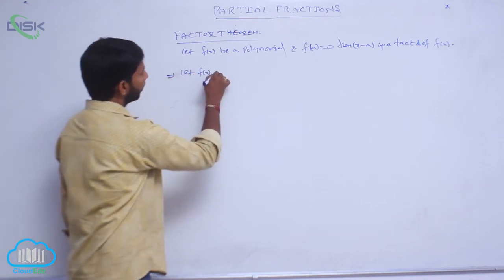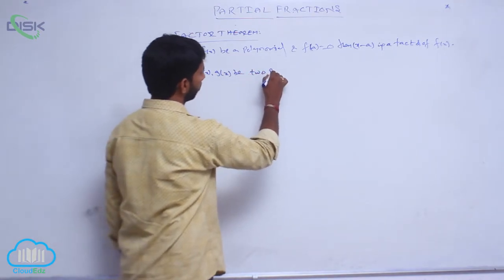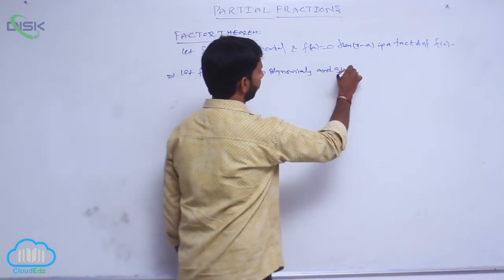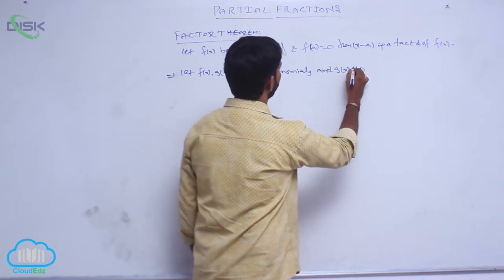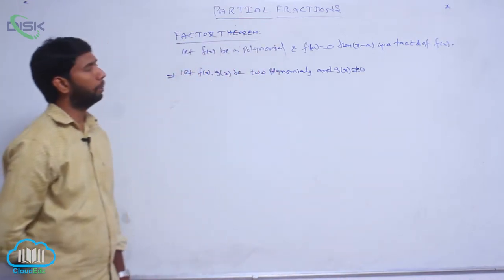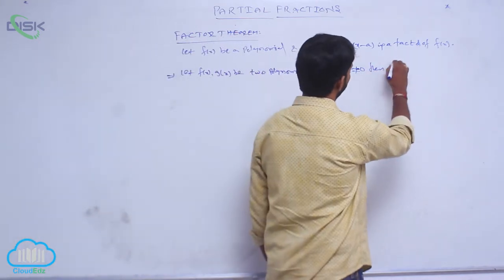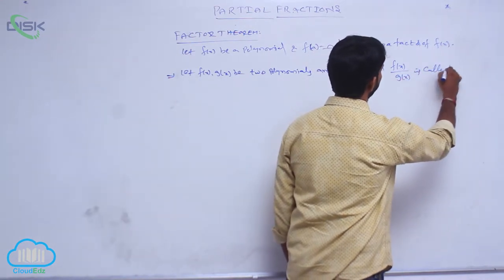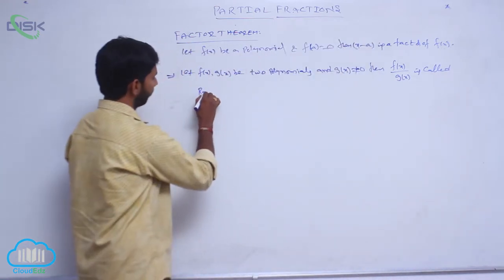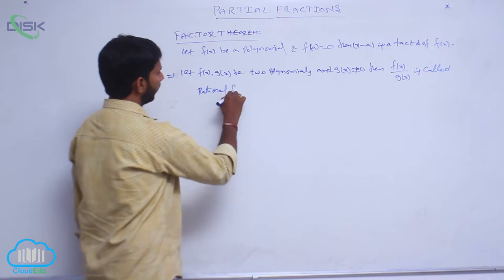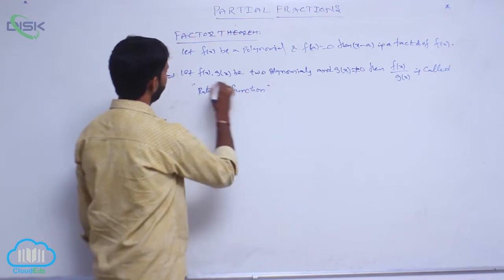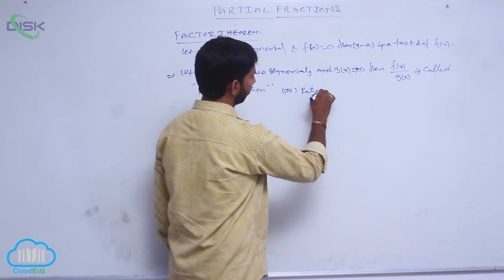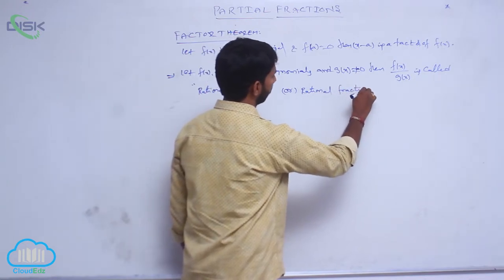Let f of x, g of x be two polynomials and g of x not equal to 0. Then f of x by g of x is called a rational function, also known as a rational fraction.